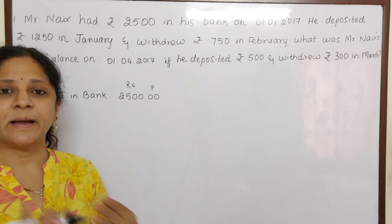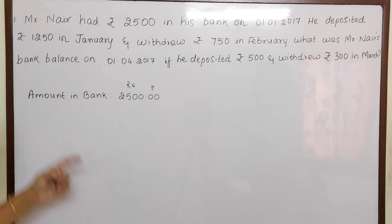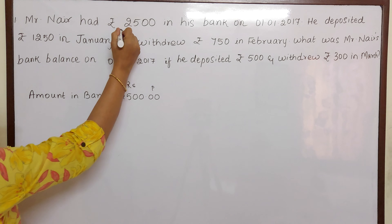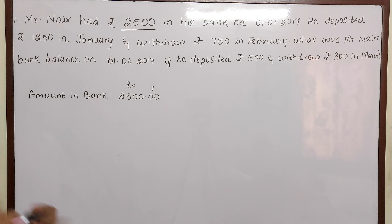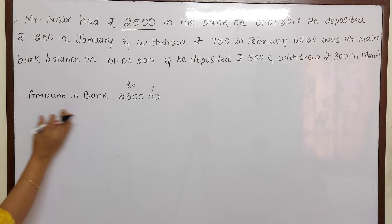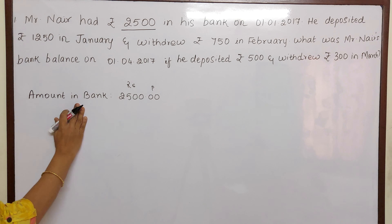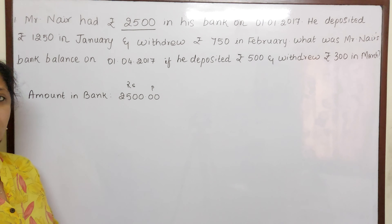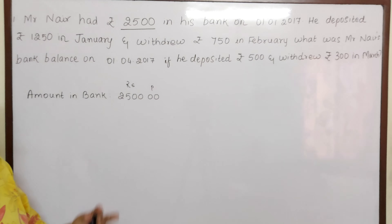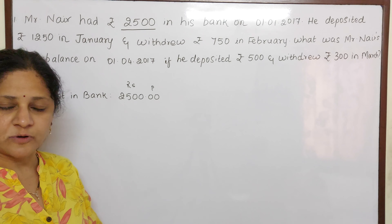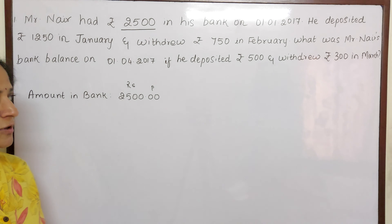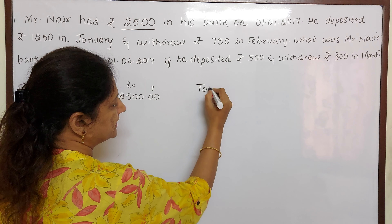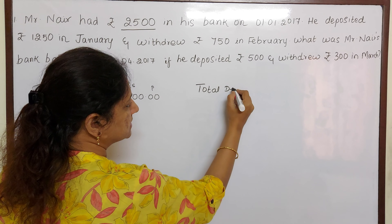Now this is about deposits and withdrawal. What they have told us? Mr. Nair had Rs. 2500 in his bank. So our first statement will be: amount in the bank is Rs. 2500. He is already having this much amount in the bank. And then he has made some deposits and he has withdrawn. So first let us calculate what are the deposits.